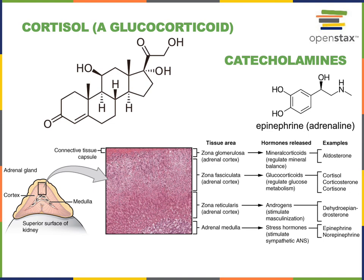Cortisol also increases appetite and has an anti-inflammatory effect, which is clinically important. Medications that bind to the glucocorticoid receptor — such as prednisone — can inhibit the immune system in autoimmune diseases and other disorders of excessive inflammation. There are three layers of the adrenal cortex: the superficial zona glomerulosa produces the mineralocorticoid hormone aldosterone, another steroid hormone, which binds to receptors in kidney cells and stimulates sodium reabsorption, contributing to increased blood volume and blood pressure.